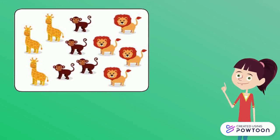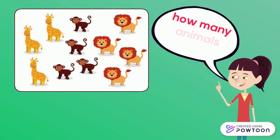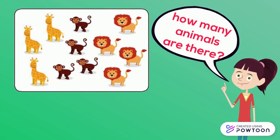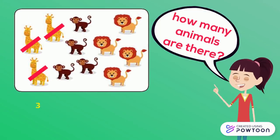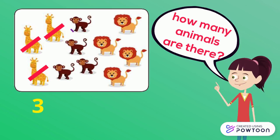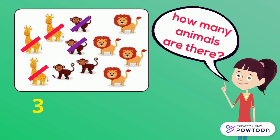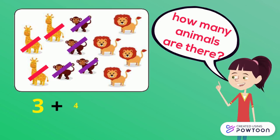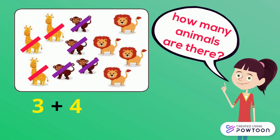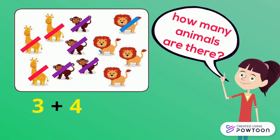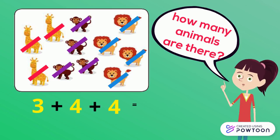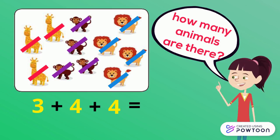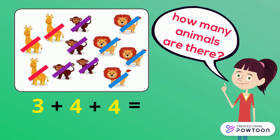How many animals are there? Let's count the giraffes — they are 3. Let's count the monkeys — they are 4. Let's count the lions — they are 4. So the addition sentence is 3 plus 4 plus 4.